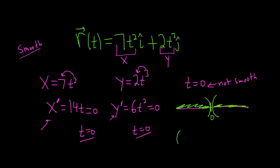So the final answer will be negative infinity to zero. That would be one interval where it is smooth. And the other one would be zero to infinity. That would be the other interval where it is smooth. I hope this video has been helpful.